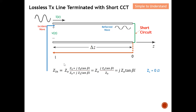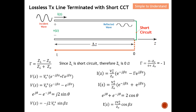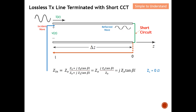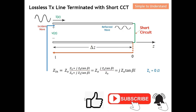If you're not sure how I obtained the Z-in equation, please see the playlist under the description. Since this is a lossless transmission line terminated with a short circuit, Z-L equals zero. Substituting Z-L equals zero into the Z-in formula causes those terms to disappear, and after Z-naught cancels out, I obtain Z-in equals j Z-naught tangent of beta-length. This is the third consideration, alongside the first and second derived earlier.